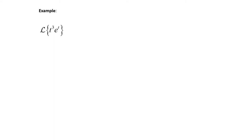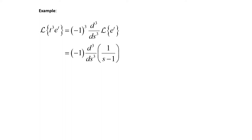So we can rewrite this as negative one to the third power times the third derivative with respect to s of the Laplace transform of e to the t. Now we can take the Laplace transform of e to the t, so this is going to be negative one times the third derivative with respect to s of one over s minus one.